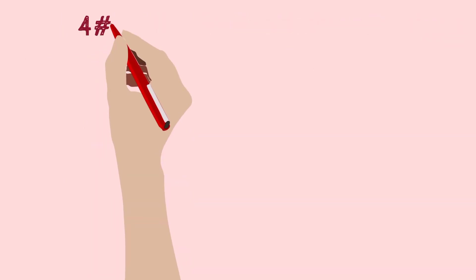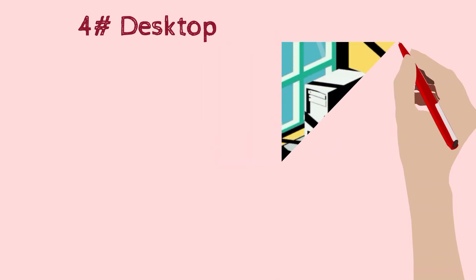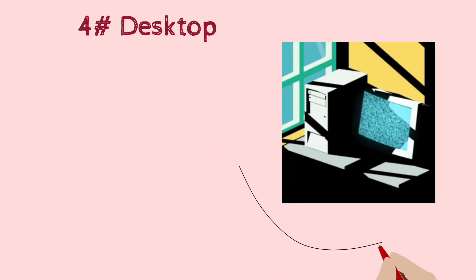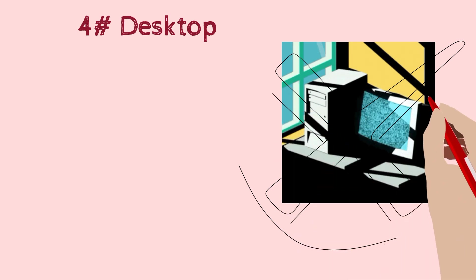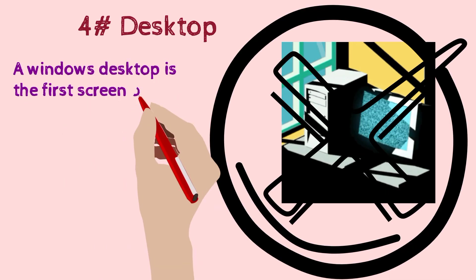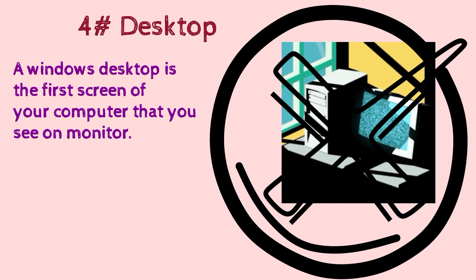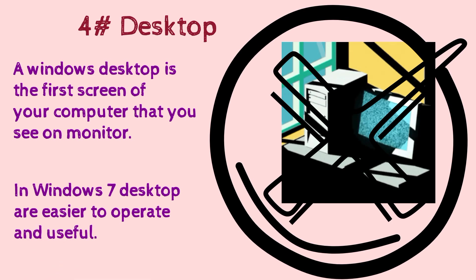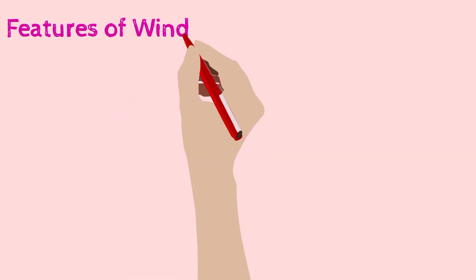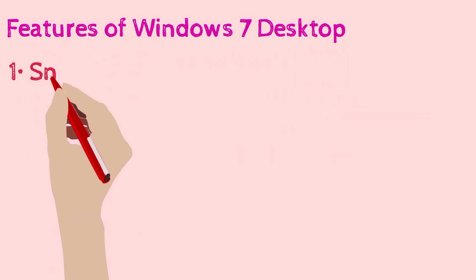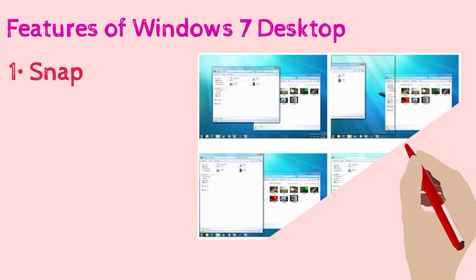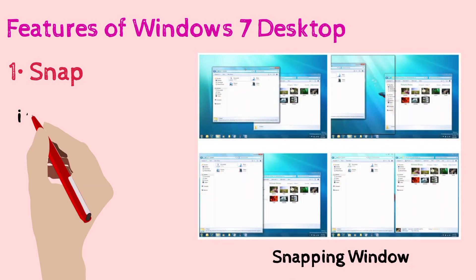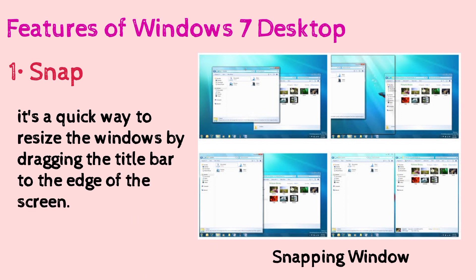The fourth feature is the desktop. A Windows desktop is the first screen of your computer that you see on the monitor, and in Windows 7 the desktop is easy to operate and useful. The first desktop feature is Snap — as you can see in the example, snapping windows provide a quick and easy way to resize a window by dragging its title bar to the edge of the screen.